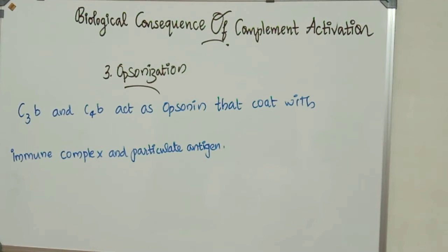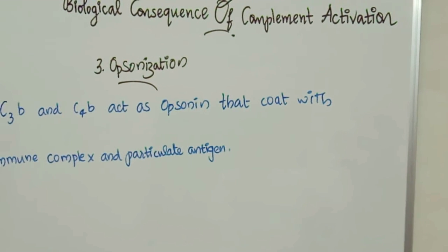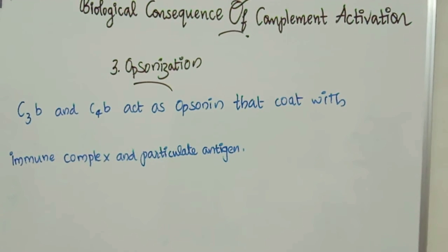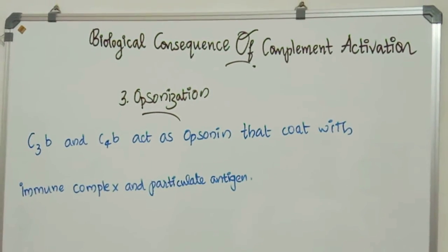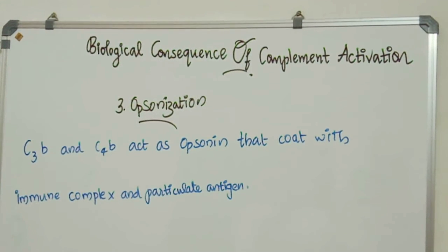Number 3: Opsonization. C3B has receptor binding capability. On binding, it acts as an opsonin. C3B and C4b are the opsonins, which coat the immune complex and particularly the antigen. When B cells bind with this, they secrete antibodies and help in the destruction of that microbe.